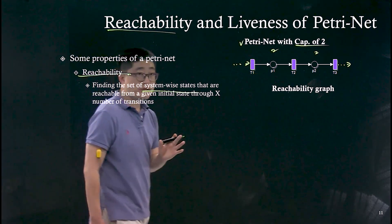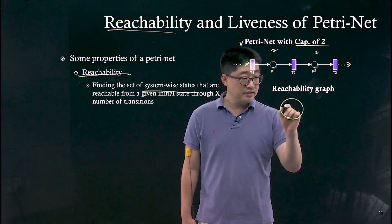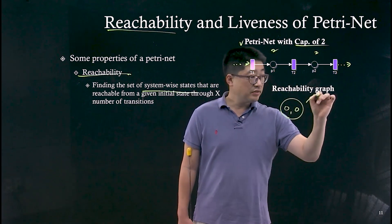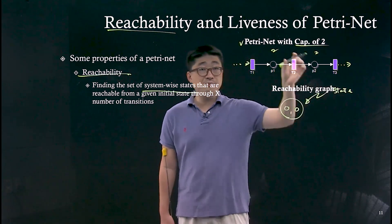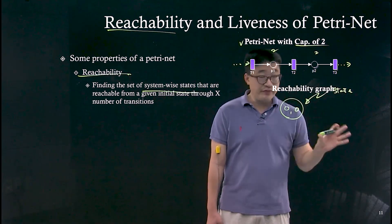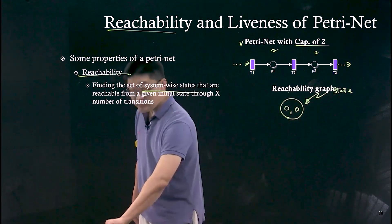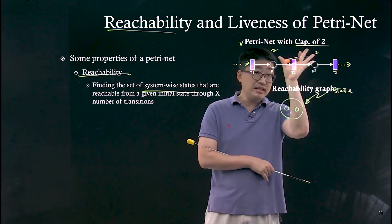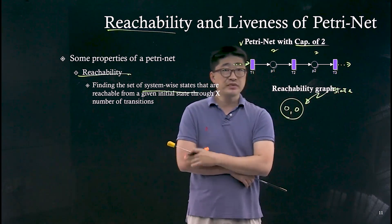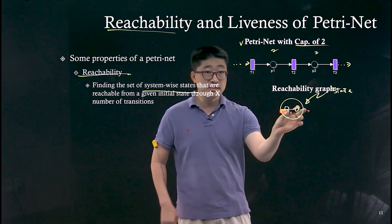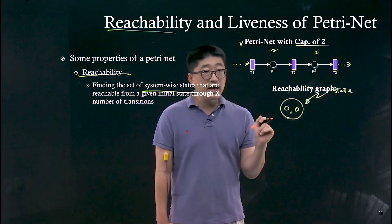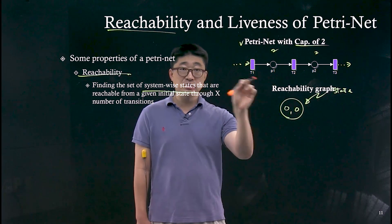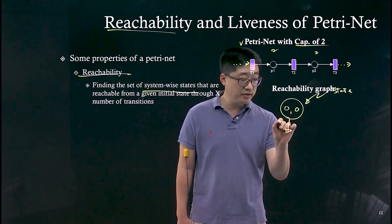The given initial state is 0,0 — this represents the two places each with zero tokens. Places and tokens together specify the state, so 0,0 means both places have zero tokens. From this state, we only have one feasible transition: T1. Let's say T1 can be fired.